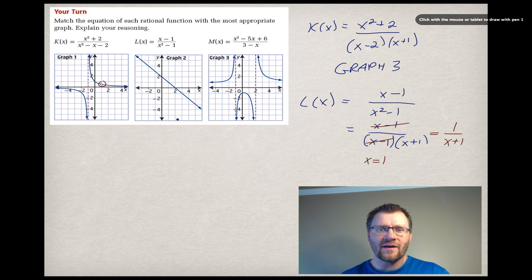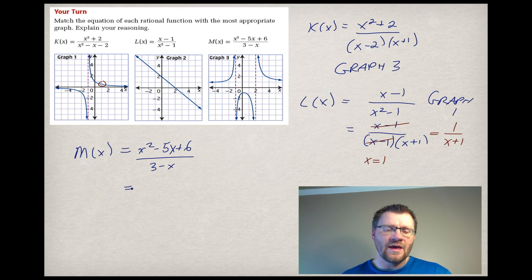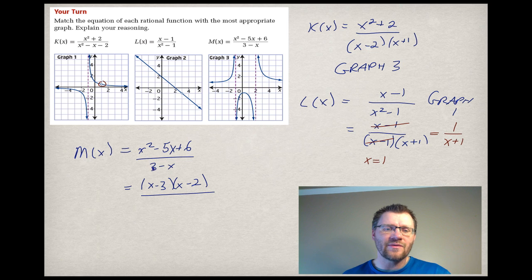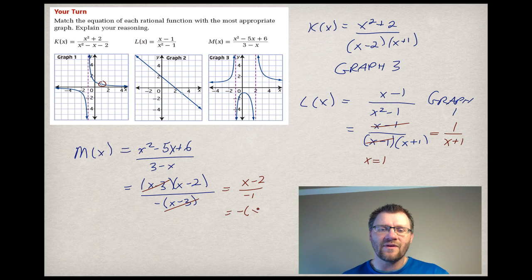Finally, m(x) is going to be graph number 2. Let's double check: we've got x squared minus 5x plus 6, all over 3 minus x. Factoring the numerator — two things that multiply to positive 6 and add to negative 5 — gives (x minus 3)(x minus 2). On the bottom, 3 minus x, I'll factor out negative 1 to get negative(x minus 3). So x minus 3 cancels, leaving (x minus 2) divided by negative 1, which is the same as negative(x minus 2). This is just a line, and that makes it graph number 2.